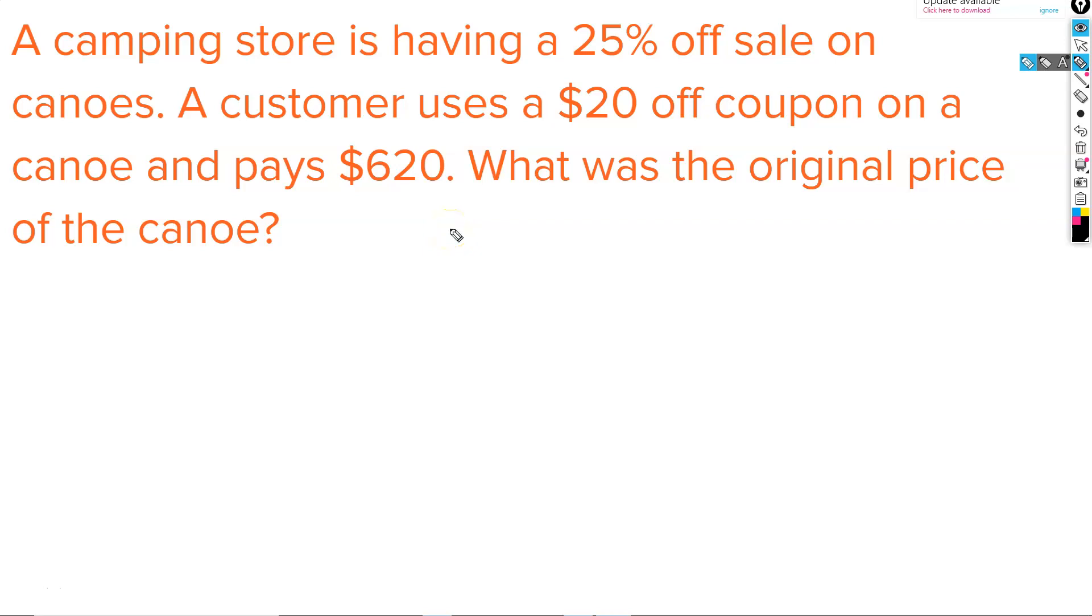We can represent this, 0.75 multiplied by x. We've also got a $20 off coupon. We will subtract 20 from that. And the final price will be $620.